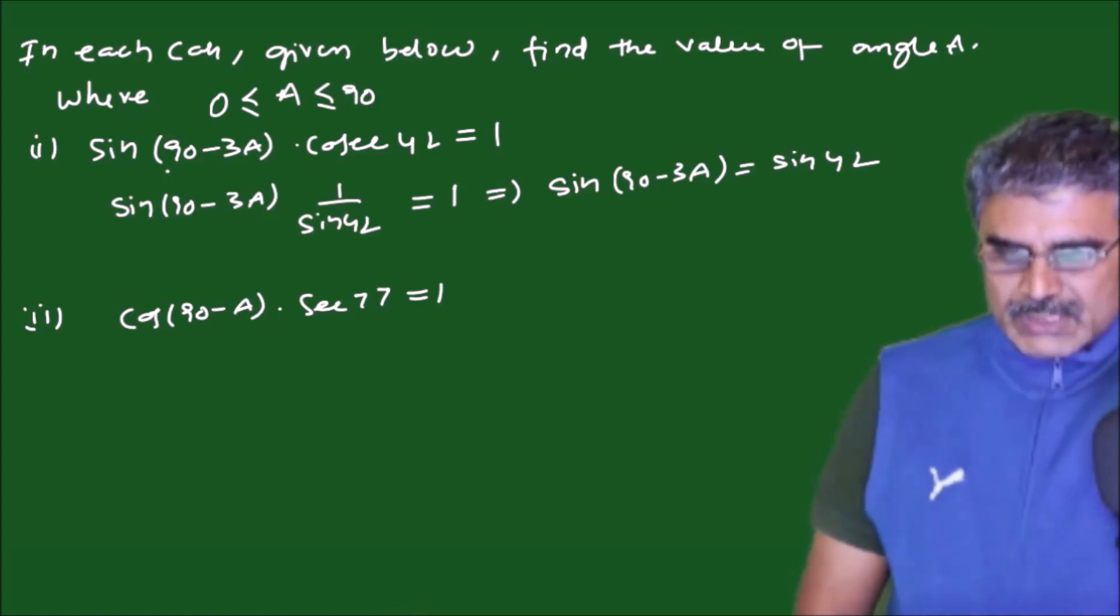Both are having same trigonometric ratios on both sides, so equate the angles like 90 minus 3A is equal to 42.